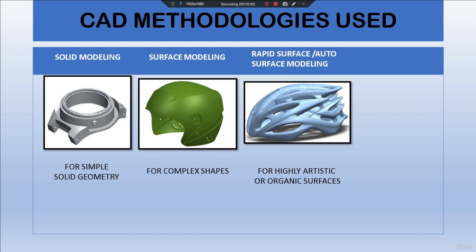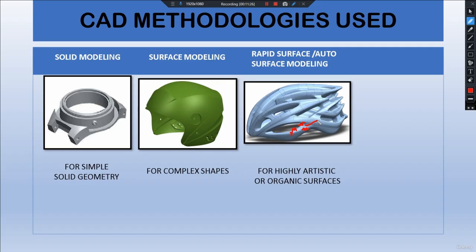The third is rapid surface modeling and auto surface modeling. This is specially used for highly artistic or organic surfaces where even creating a complex shape is difficult to merge with another surface. Rapid surfacing reduces our efforts greatly by automatically creating surfaces where needed. Auto surface modeling is similar to rapid surfacing but is used to obtain a closed volume CAD model. Auto surfacing is effort-less, but editing the result is a big task.